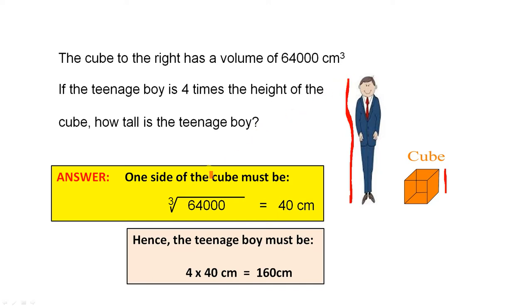So how tall is he? Now, if the volume of the cube is 64,000 cubic centimeters, therefore one side of the cube must be the cube root of 64,000. And that gives you 40 centimeters. Because 40 times 40 times 40 gives you 64,000.